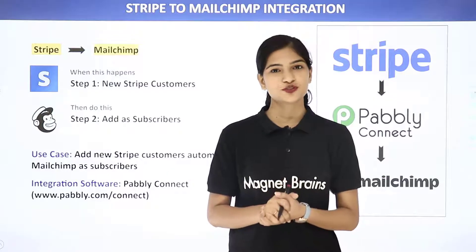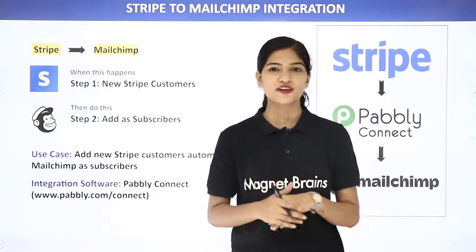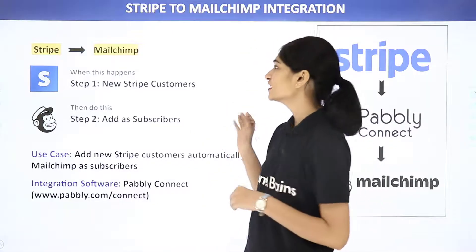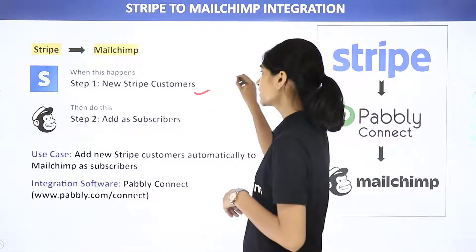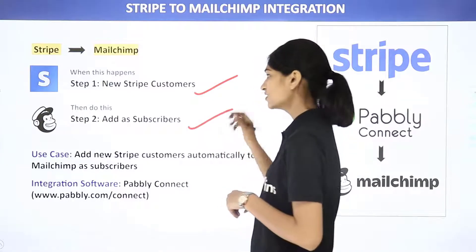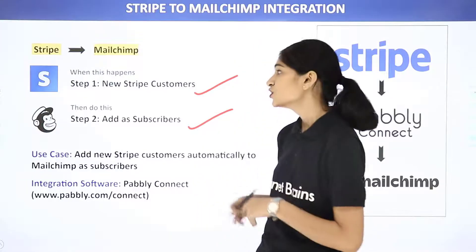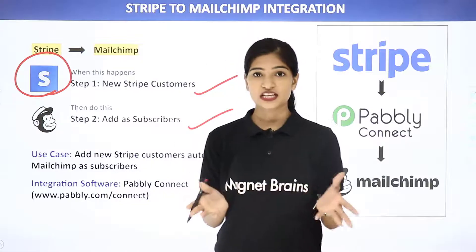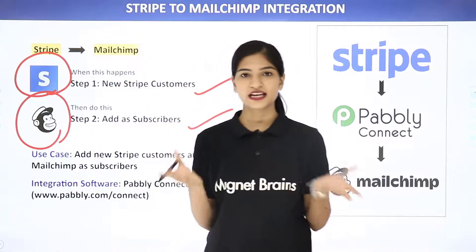Hello everyone, welcome to Pabbly Connect. Today in this video we are going to integrate two software applications: Stripe and Mailchimp. The use case here is whenever there is a new customer in Stripe, we want to add them as a subscriber in Mailchimp. Stripe is an online payment processing software, whereas Mailchimp is an email marketing software which helps you to create your email campaigns.